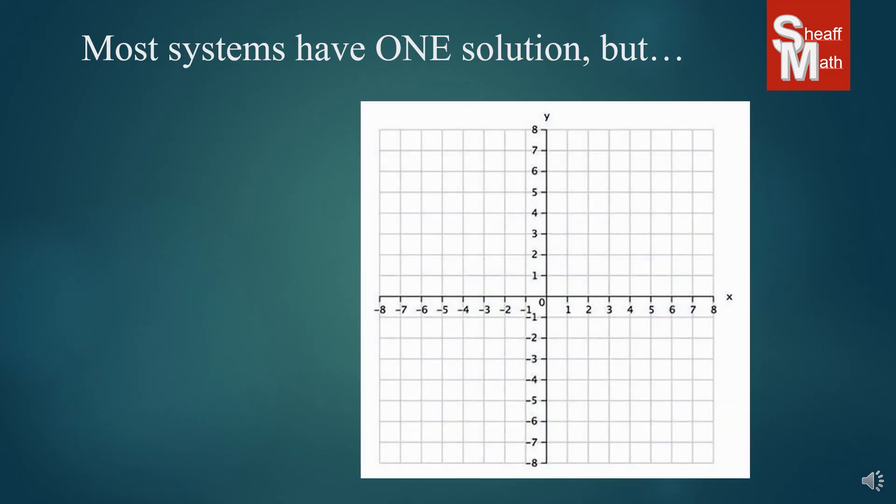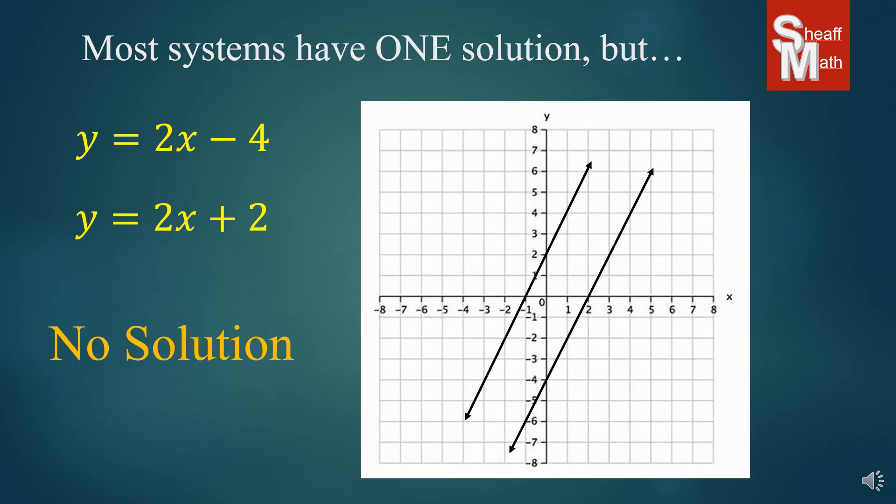So let's suppose you're graphing these lines. And here's your first line. And there's your second line. And so they appear to be parallel. So we've got a little problem here. These two will never cross. So let's take a look at their equations. And you can see that their slopes are the same. And so if your slopes are the same, then there will never be a solution to this system. And you would just put no solution.